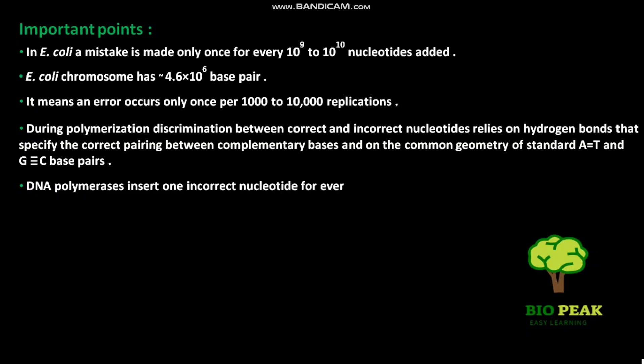DNA Polymerases insert one incorrect nucleotide for every 10 to the power 4 to 10 to the power 5 correct ones in in vitro condition.